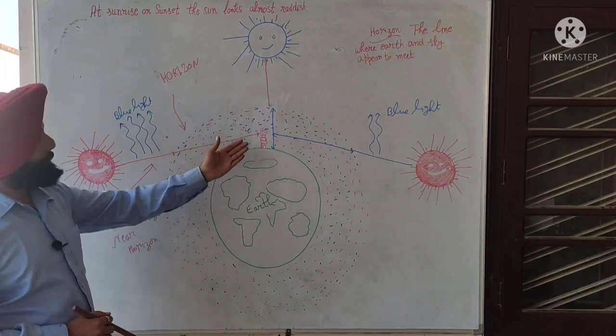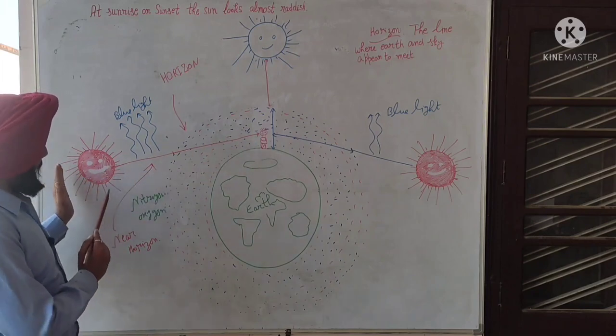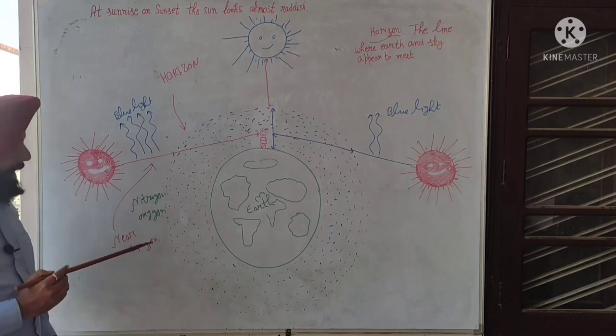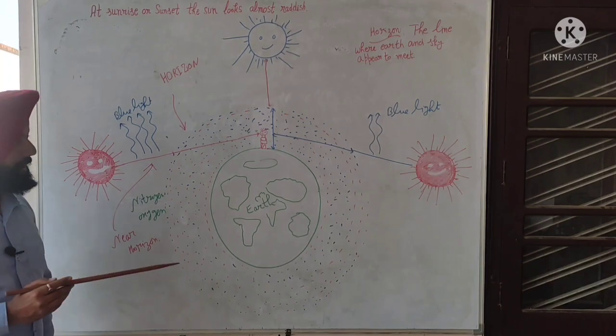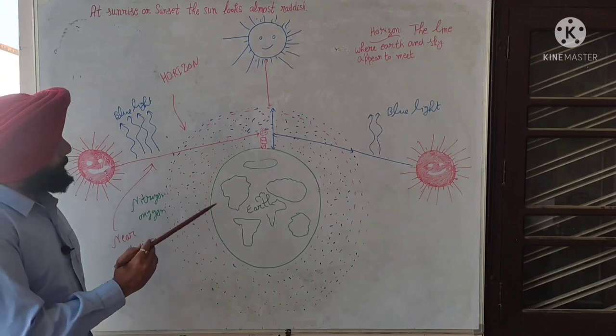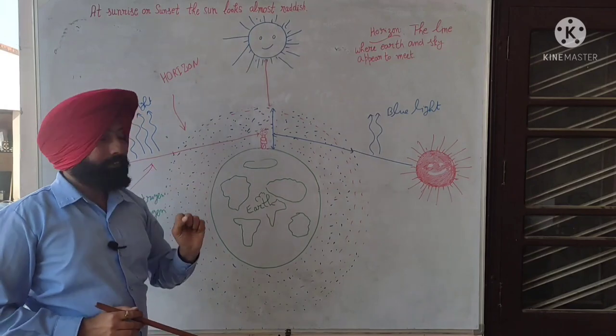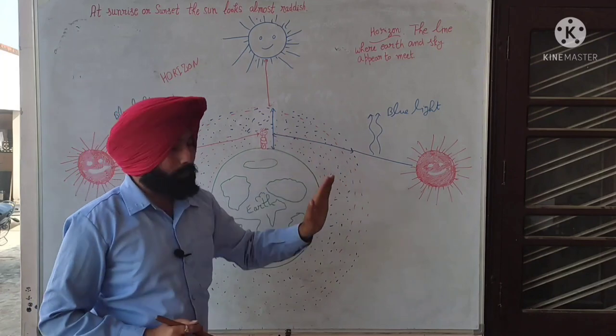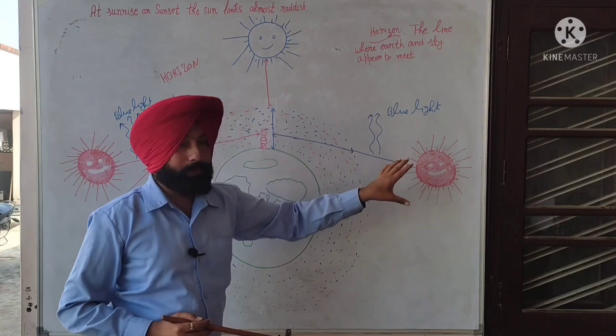Now here is our observer Tippu. Tippu is looking at the rising of sun when the sun is rising and it looks almost reddish. But when Tippu at noon sees the sun it looks white, and after that at sunset Tippu again watches the sun and its color changes to reddish.